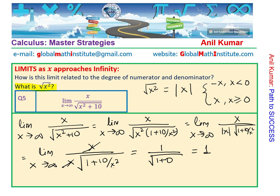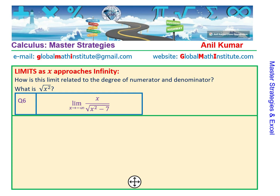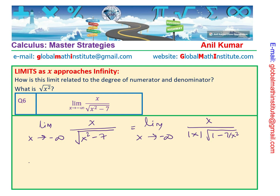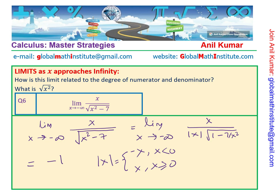The last example has the limit approaching negative infinity with a similar structure. We write limit x approaches negative infinity of x over |x| · √(1 − 7/x²). Since x is approaching negative infinity, the absolute value of x equals −x, so the answer is −1. Previously it was positive 1, but here it is negative 1 — this is the most important concept to take away.